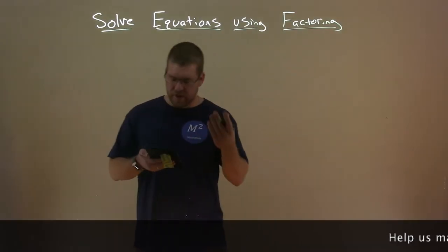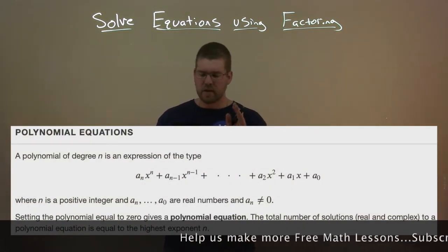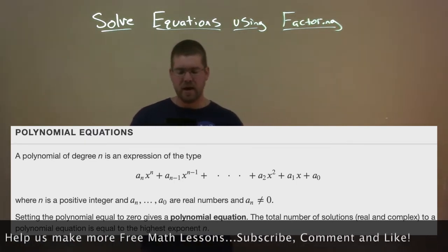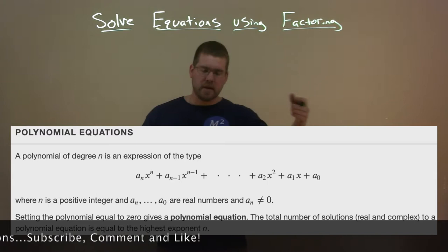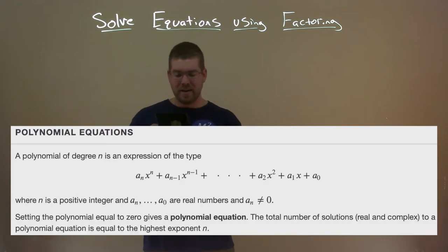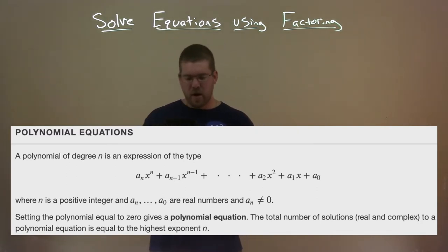So let's start off again with a definition, polynomial equations. A polynomial of degree n is an expression of the type a_n x^n plus a_(n-1) x^(n-1) plus dot dot dot plus a_2 x^2 plus a_1 x plus a_0. Where n is a positive integer and a_n dot dot dot a_0 are real numbers and a_n is not equal to 0. Setting the polynomial equal to 0 gives a polynomial equation.